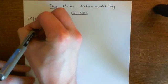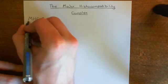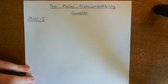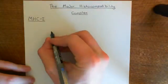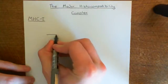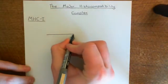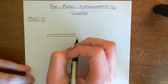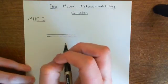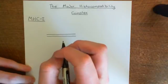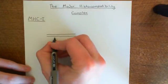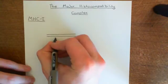So, MHC Class 1. This is a protein complex that is on the surface of all nucleated cells in your body. So let's put the phospholipid bilayer here, and now let's draw the two proteins that are involved in MHC Class 1. There are two proteins that have to come together.